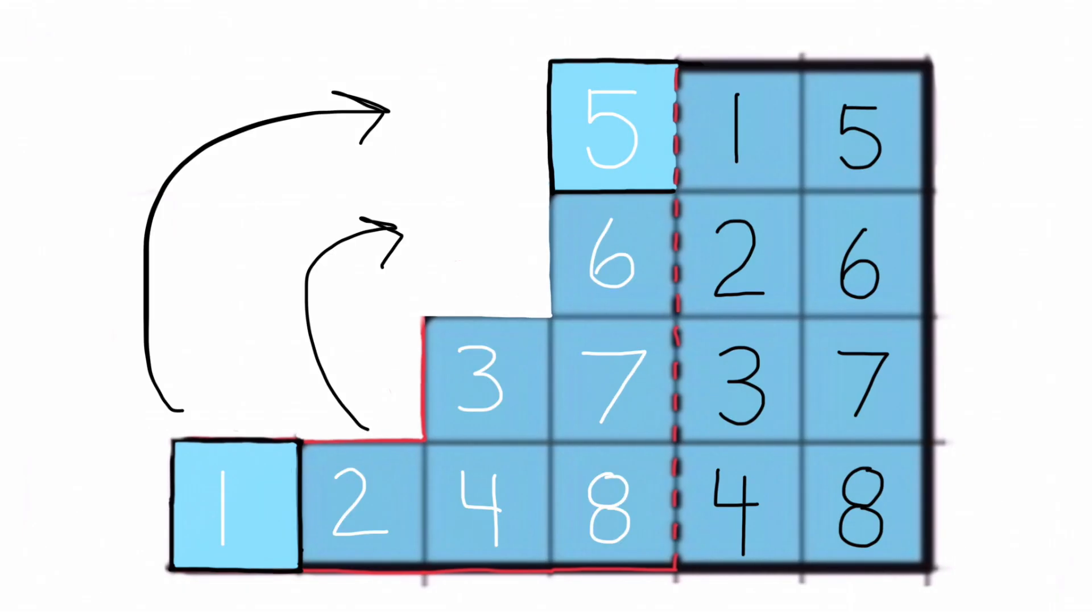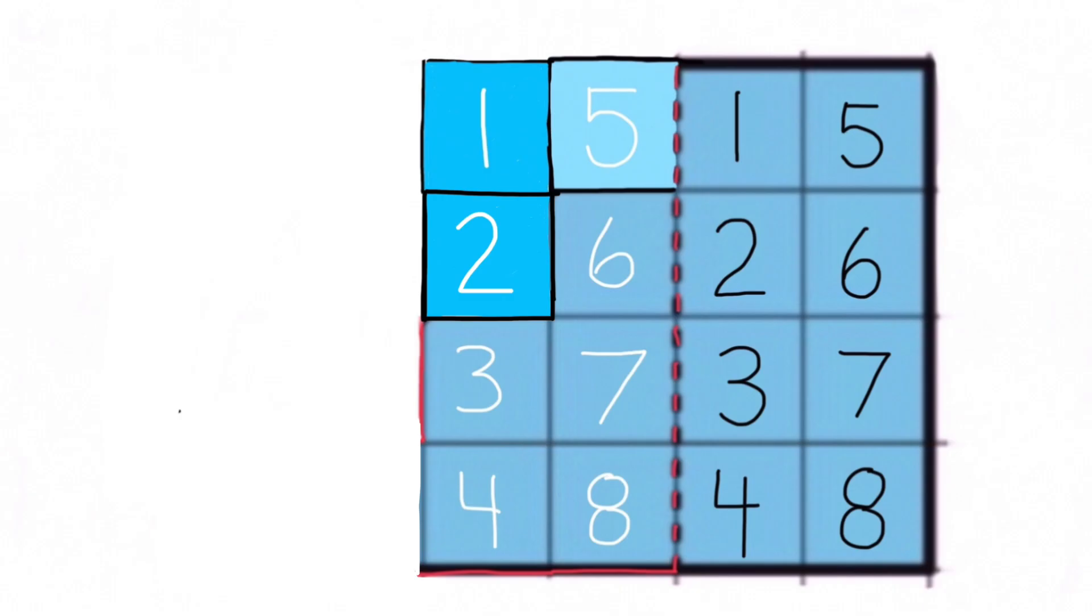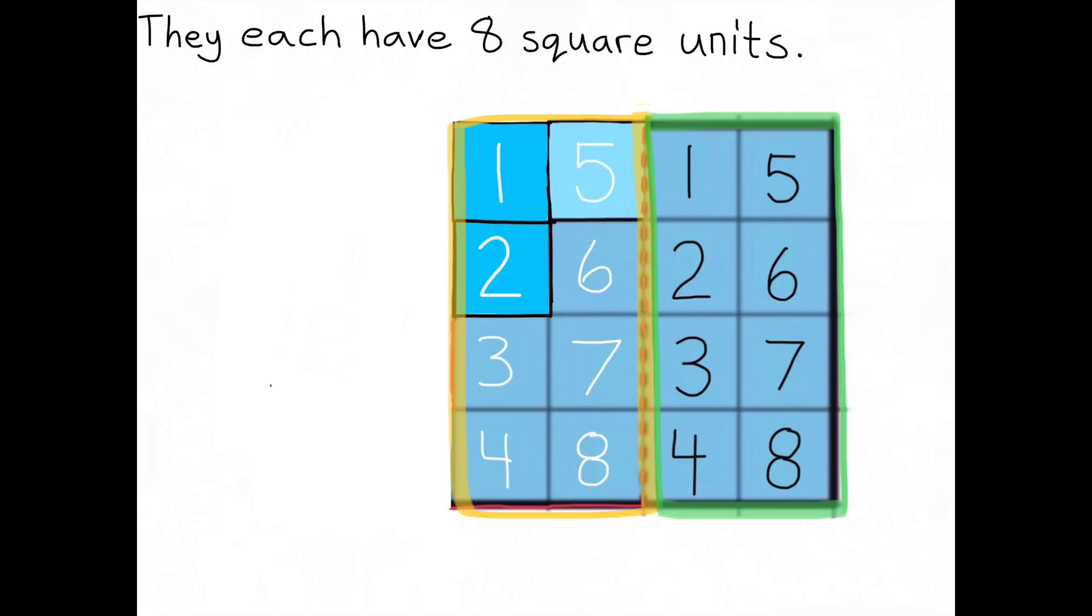Now I can rearrange these unit squares and stack them on top of each other to make a rectangle that has the dimensions 2 by 4, just like the rectangle on the right. She was correct. They each have an area of 8 square units.